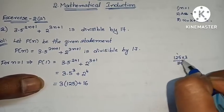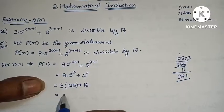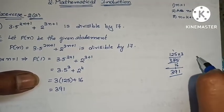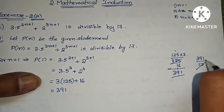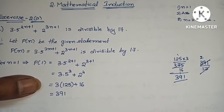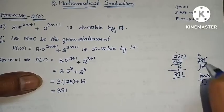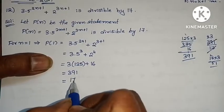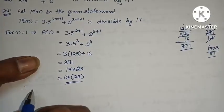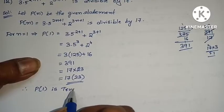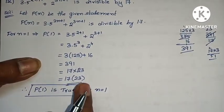Is 391 divisible by 17? Let's check directly using the multiplication table. 17 times 23: 17 into 23. So 391 equals 17 into 23, which means it is divisible by 17. Therefore P of 1 is true for n equals to 1. The first statement is proved true.